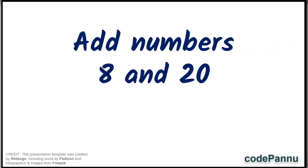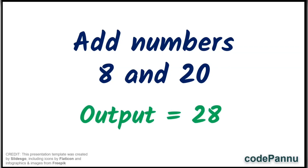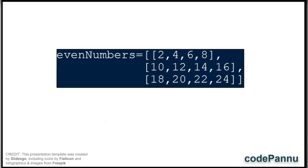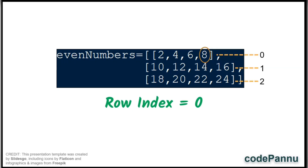In this video let us see examples of how to do addition. First we shall see how to add the numbers 8 and 20. If we add 8 and 20, the output should be 28. To get the item 8 from the first row, we should use the row index number as 0 because it is the first row, and the column index number as 3 because it is the fourth item.